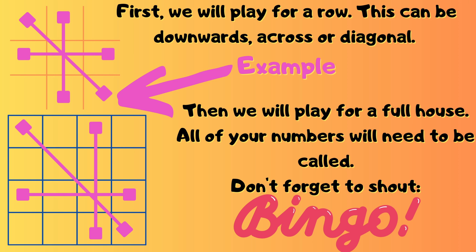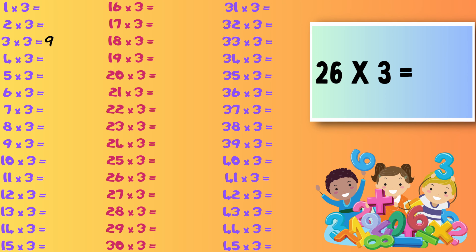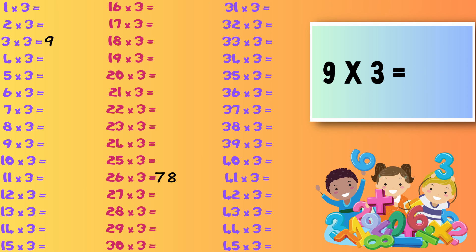So let's get started. Three times three — nine. Twenty-six times three — seventy-eight. Nine times three — twenty-seven.